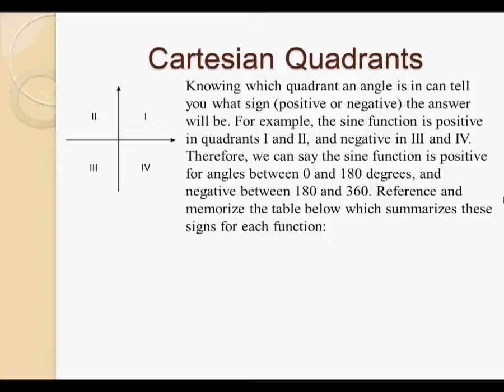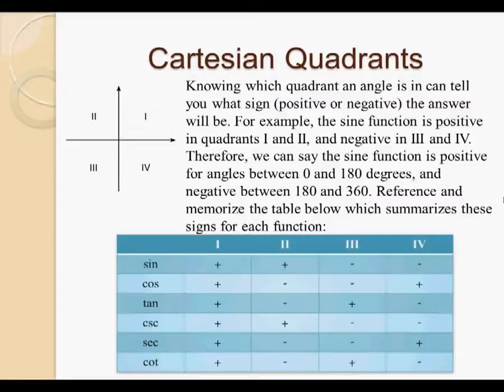Knowing which quadrant an angle is in can tell you what sign, positive or negative, the answer will be. For example, the sine function is positive in quadrants one and two, and negative in quadrants three and four. Therefore, we can say the sine function is positive for angles between zero and 180 degrees, and negative between 180 and 360 degrees. Reference and memorize the table below, which summarizes these signs for each function. Now this table has sine, cosine, tangent, cosecant, secant, and cotangent sine values for each of the four quadrants.